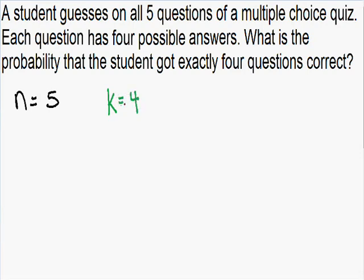We know there are five total questions and the student got four correct, which means he got one incorrect. We write the number of failures with the expression N minus K. The total number N, which is five, minus the number correct K, which is four — five minus four is equal to one.